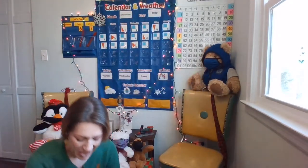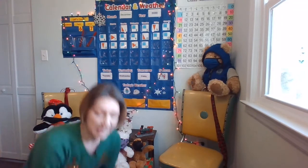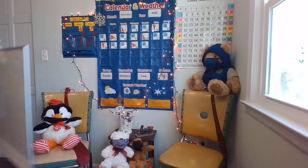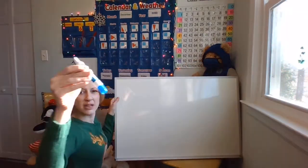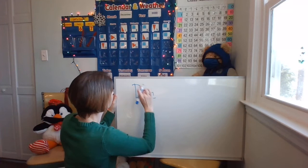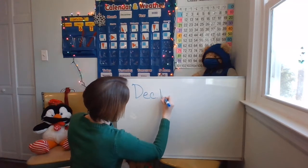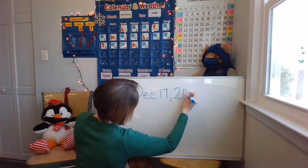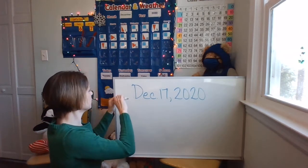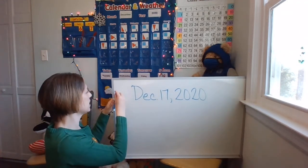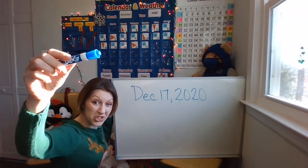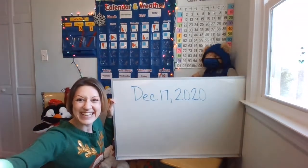Let's write the date. Remember, something to write on and something to write with. If your dry erase board is nearby, that would be really fast. Put your cap on the bottom so you don't lose it. So December, and it's going to be the 17th, 2020. Go ahead and write the date. When you're done writing the date, take the cap of your marker and make sure it goes at the top part — press it down and hear the click so the marker doesn't dry out. Write the date down fast, we're going to ask you.